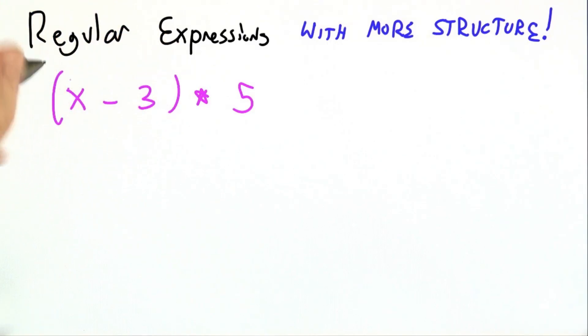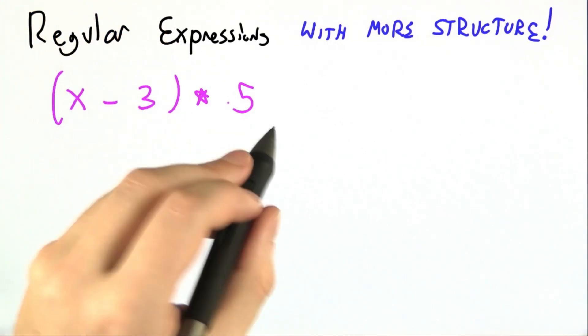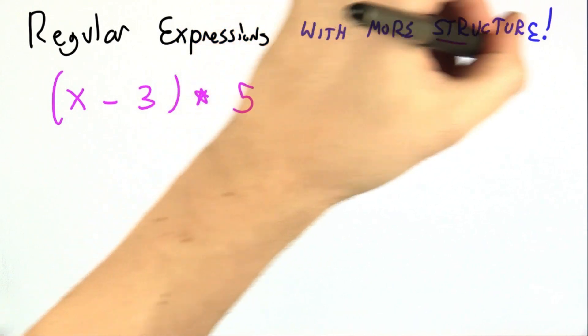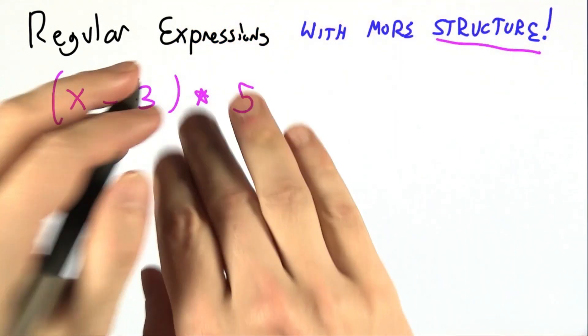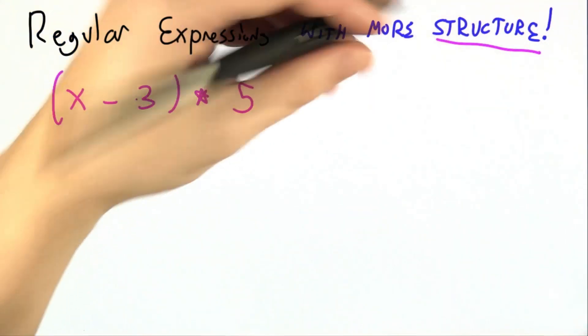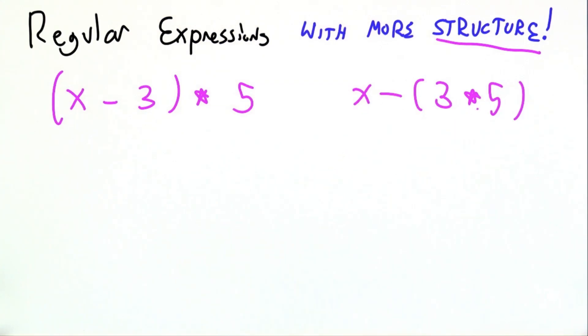In mathematics, when an expression gets complicated, we can add parentheses to show structure or grouping. x minus 3 times 5 is different than x minus 3 times 5.